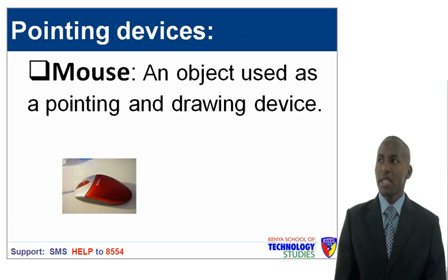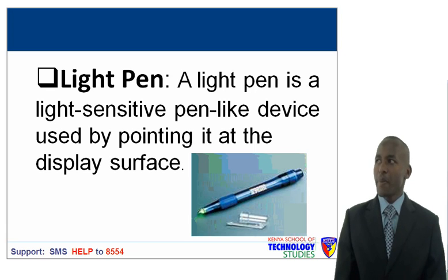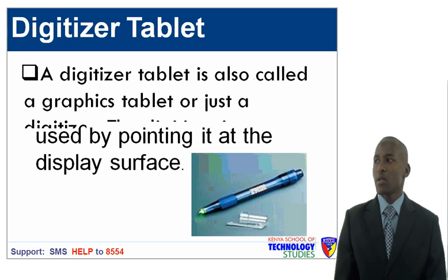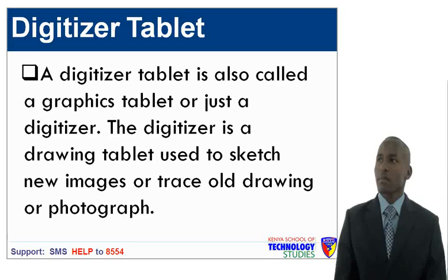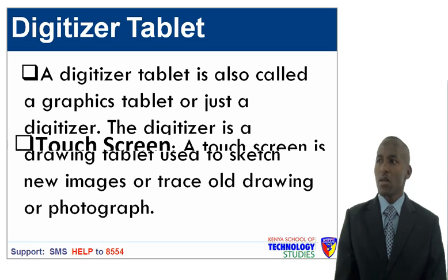Now let us look at pointing devices. The first is a mouse, an object used as a pointing and drawing device. The other is a light pen, a light-sensitive pen device used for pointing at the display surface. Next is the digitizer tablet, also called a graphic tablet or digitizer. The digitizer is a drawing tablet used to sketch new images or trace old drawings or photographs.